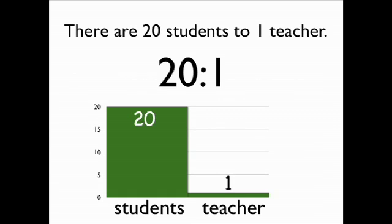That is, there are 20 students to one teacher. There is a 20 to 1 ratio. This bar graph represents the students to teacher ratio. On the left, a bar of length 20 represents students. And on the right, a bar of length 1 represents the teacher.